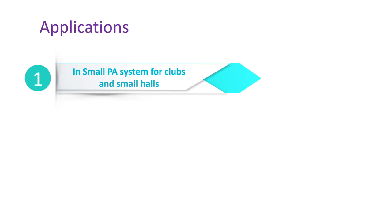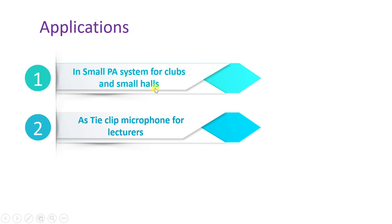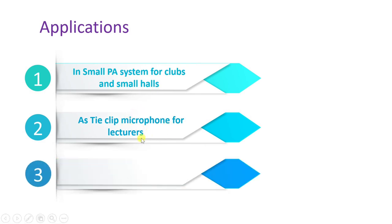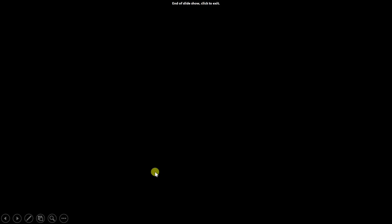The applications of the electret microphone include use in small PA systems for clubs and small halls, as a tie-clip microphone for lecturers, and as a radio microphone in sports. These are the main applications that help us understand the electret microphone.